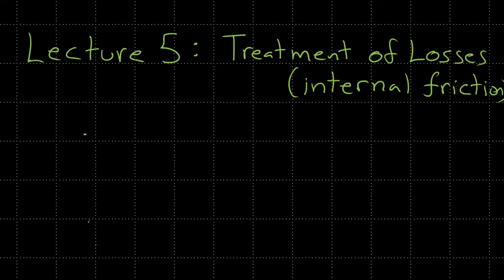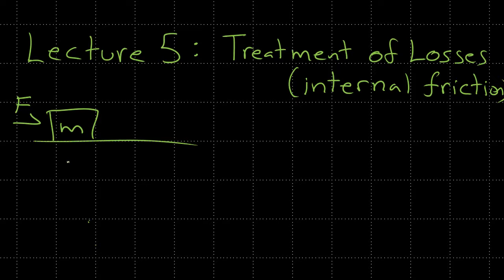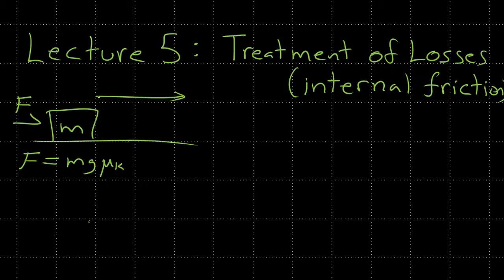Let's talk about friction. When we move a material and apply a force equal to the weight of the material — mass times g times some kinetic friction coefficient — this is the force we need to apply. So if we move this material some delta x, then the energy we needed, or the work we did, was force times delta x.